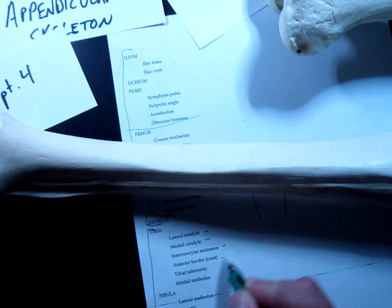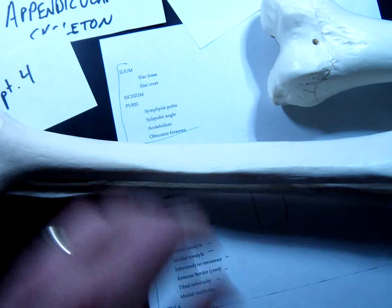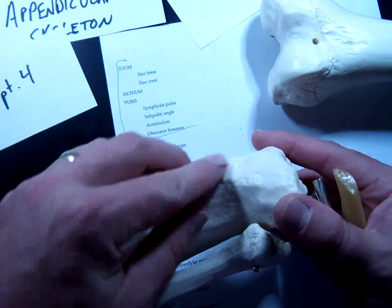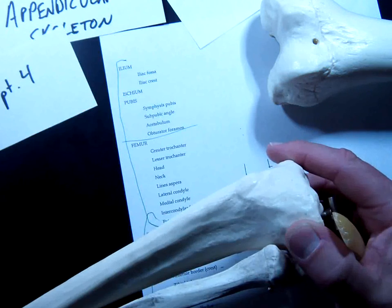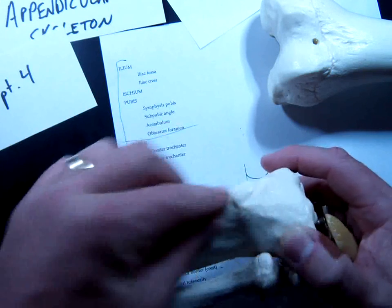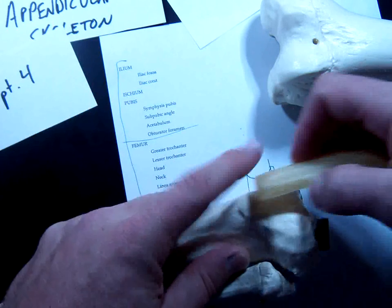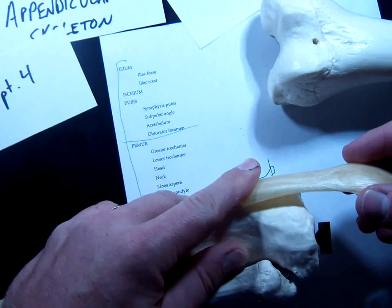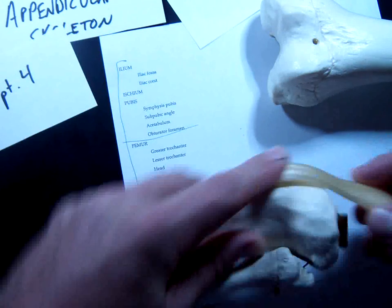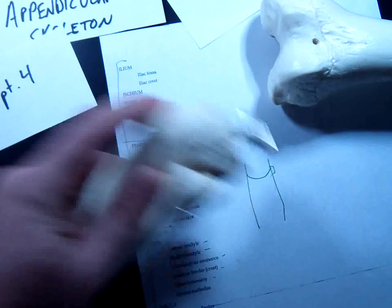Now, this next one, tibial tuberosity, is wicked important because all of the muscles of the quadriceps attach to this. And you may be able to feel this bump right here sticking out. Go below your kneecap and feel below the squishy part there. Go all the way down and you might feel a little bump sticking out right there. That is the tibial tuberosity. Its significance is that every single muscle of the quadriceps, all those big muscles of the quad, they all attach to this bump right here. So this is what allows you to straighten your leg, is that those muscles attach to this thing here.